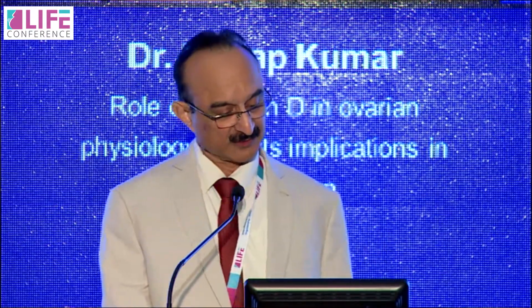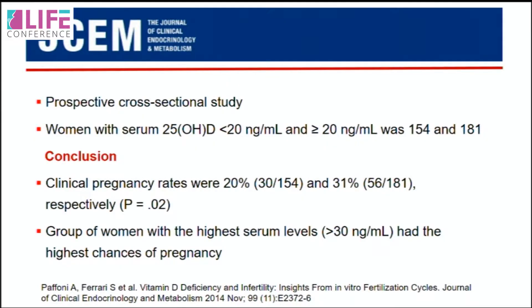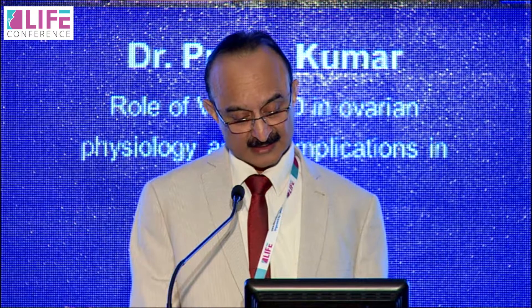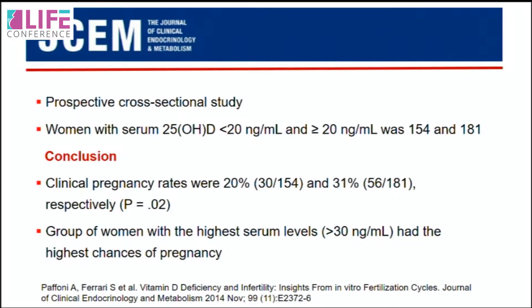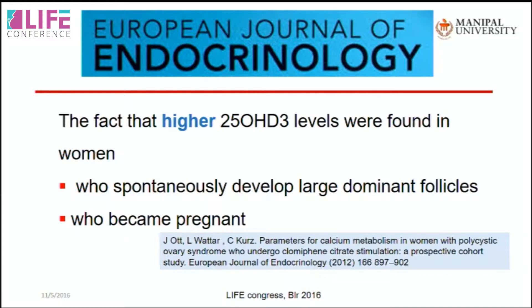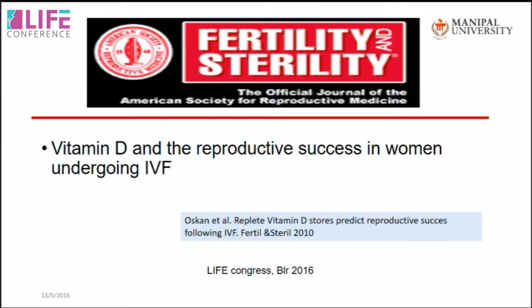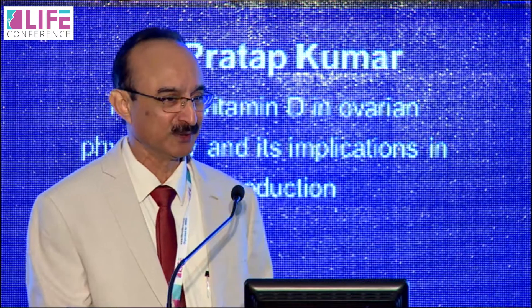A 2014 prospective cross-sectional study compared two groups — those with less than 29 ng/mL (n=154) and those with more than 29 ng/mL (n=181). Pregnancy rates were 20% versus 31% respectively, suggesting that women with higher serum vitamin D levels above 30 ng/mL had the highest chance of pregnancy. Another study similarly found that women with higher vitamin D levels developed larger dominant follicles and were more likely to become pregnant, supporting a role for vitamin D in reproductive success during IVF.